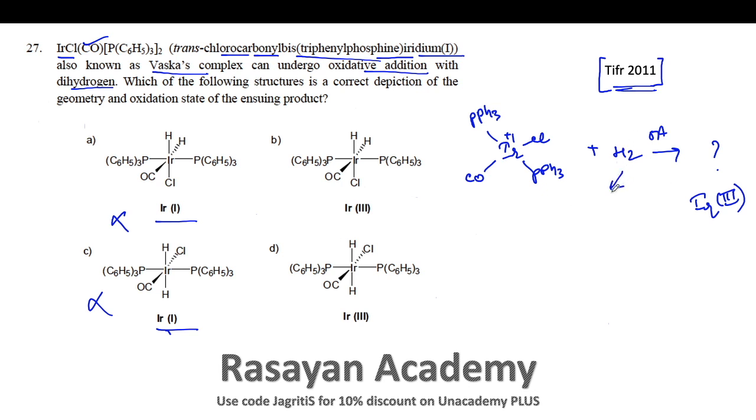Option A and C you can directly cut off because here iridium is in +1 oxidation state. Moving onwards, hydrogen is a non-polar molecule which usually gives you concerted mechanism, where the molecule adds on the same side. You cannot have a trans hydrogen addition; it will be a cis hydrogen addition. Both of the hydrogen atoms will be on the same side and the iridium is in the three oxidation state, so your answer is option B.